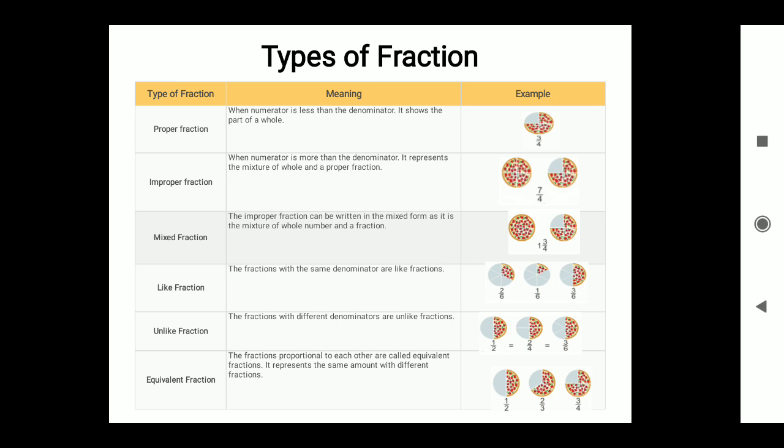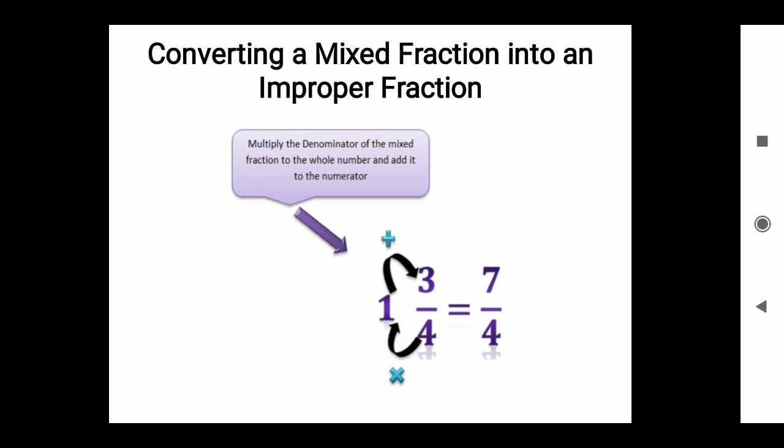Converting a mixed fraction into an improper fraction: looking at this diagram with 7/4, we multiply the denominator of the mixed fraction by the whole number and add it to the numerator. You have done this in earlier classes, like in class 5.